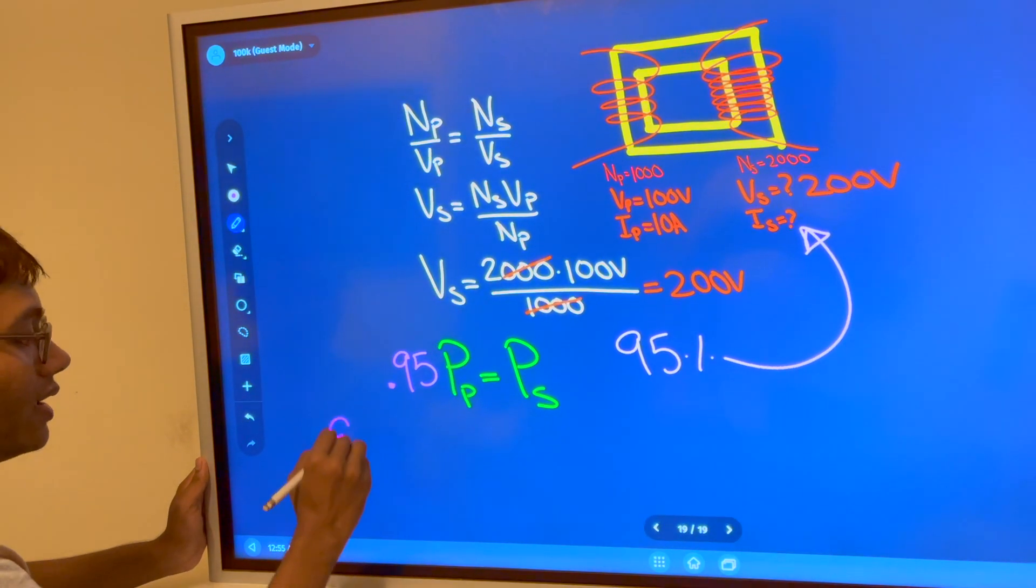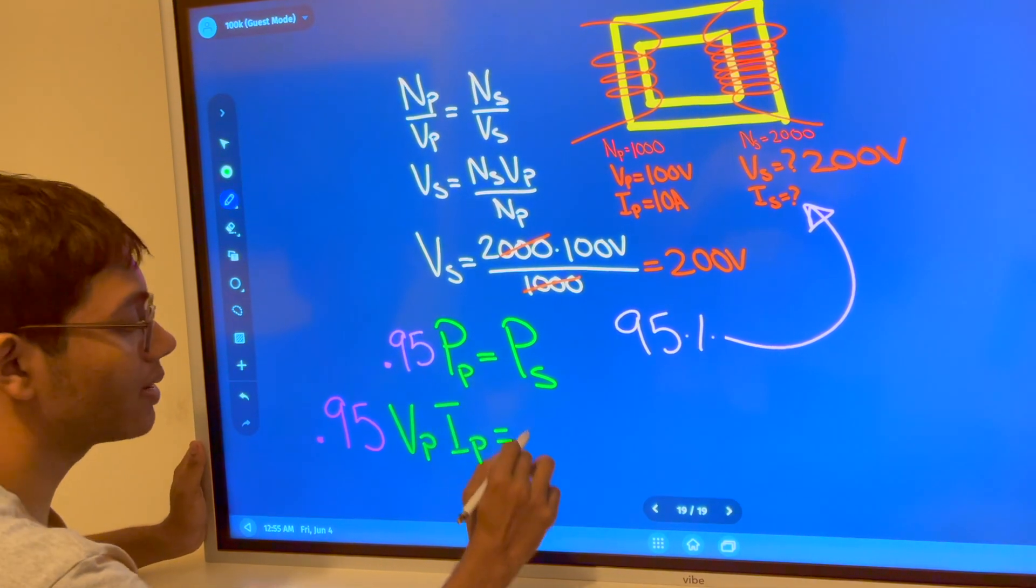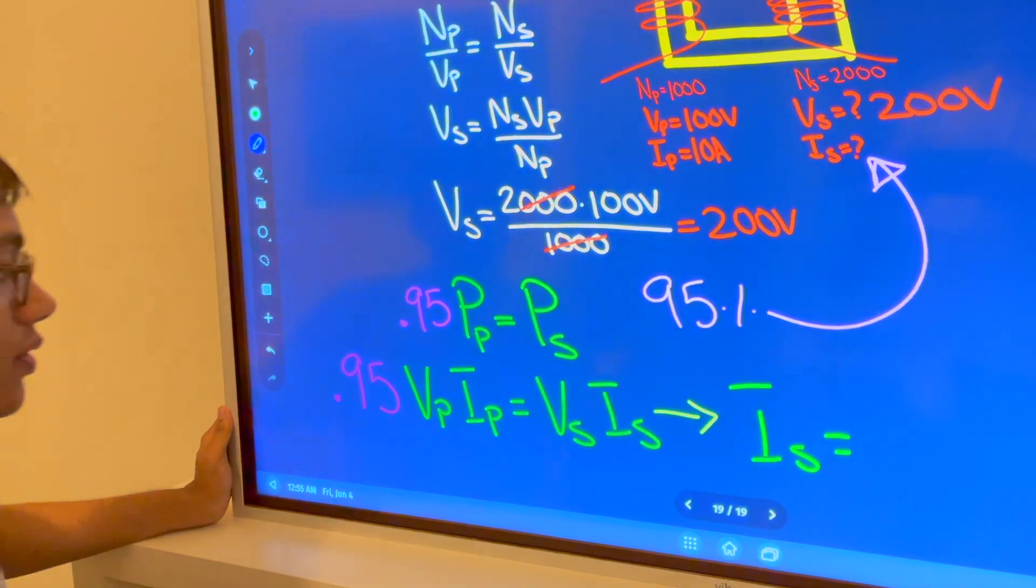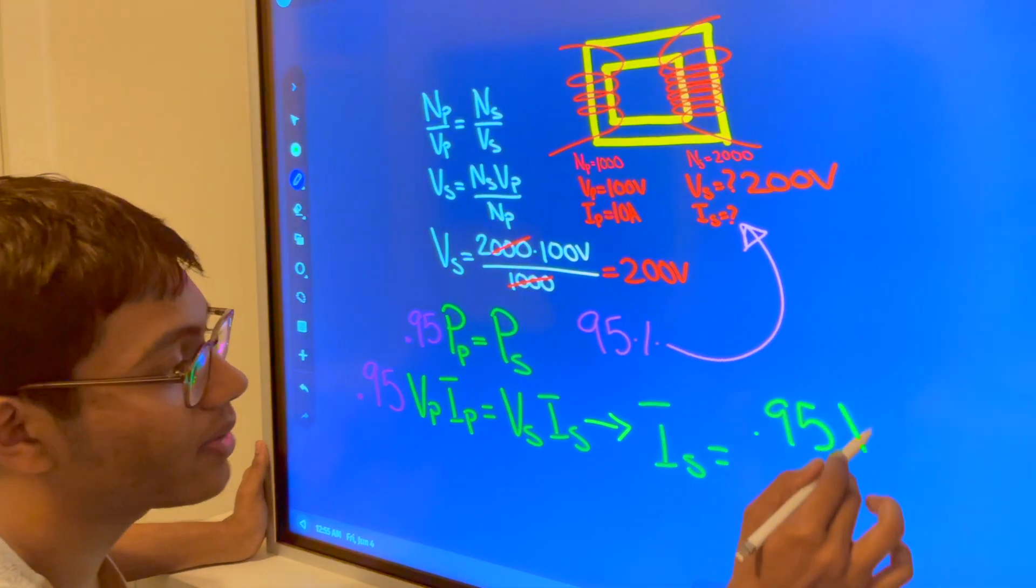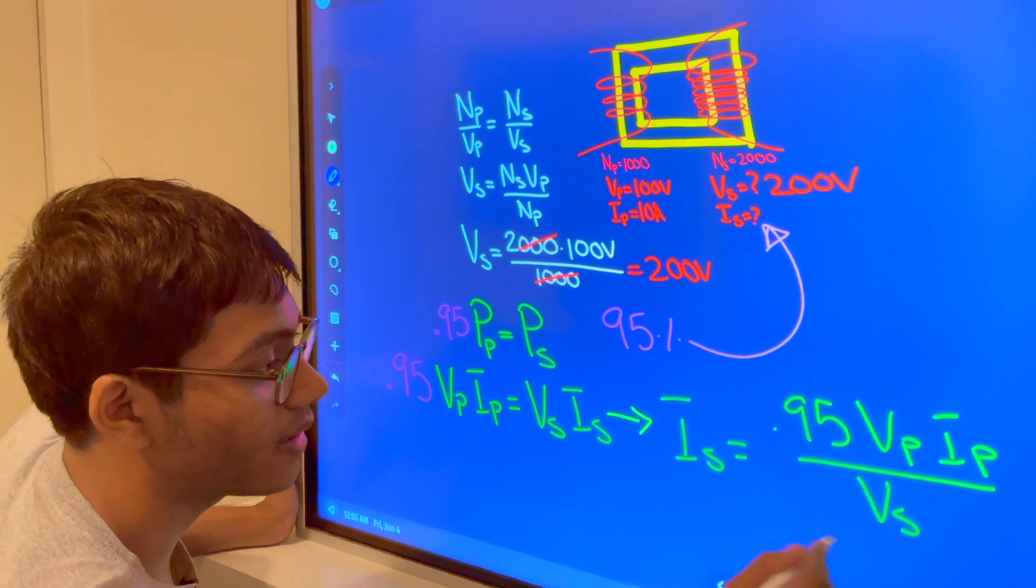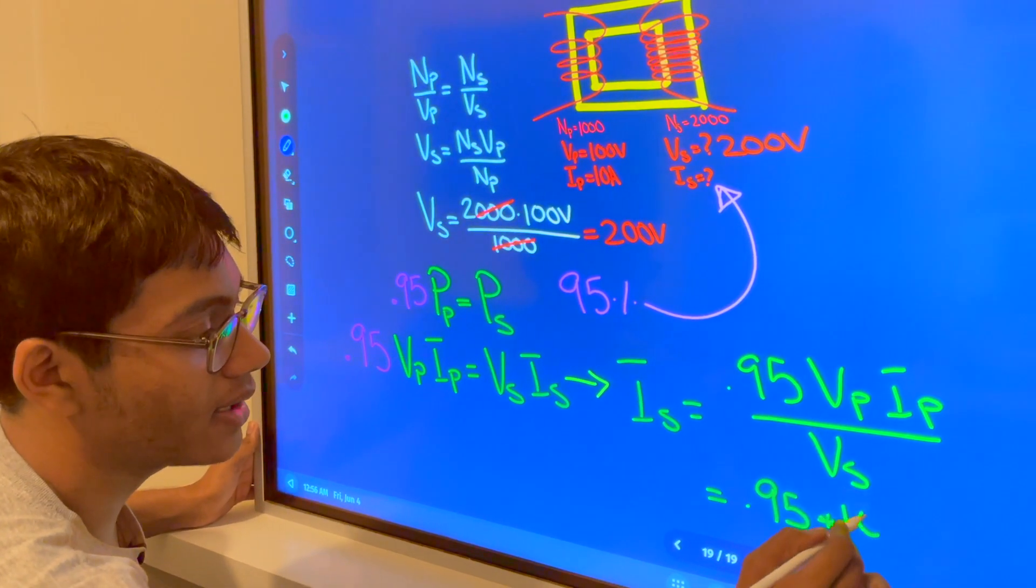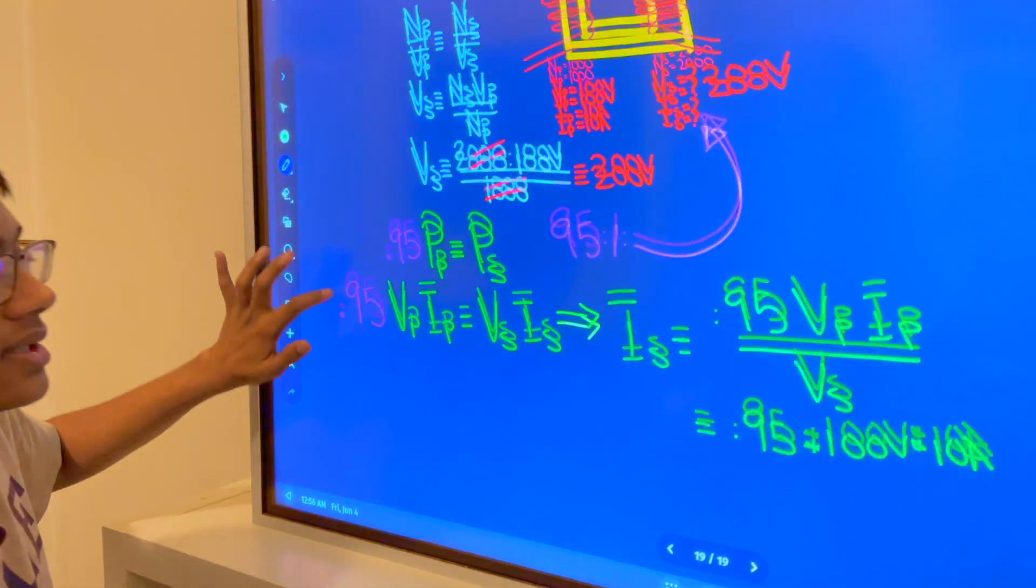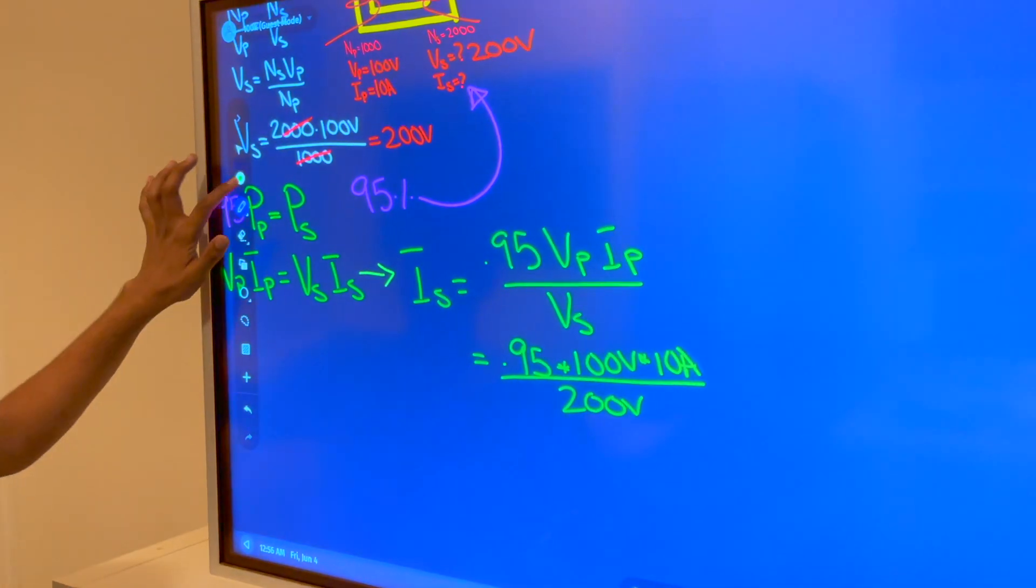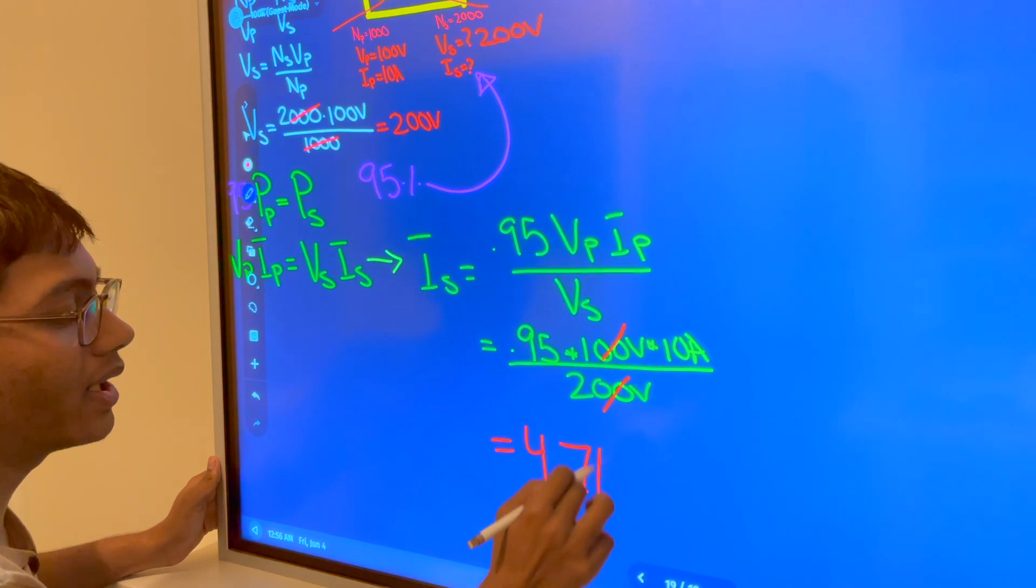What's the primary power? Power is voltage times current. So the primary voltage times the primary current equals the secondary voltage times the secondary current. If I plug in everything: Is = 0.95 × Vp × Ip / Vs. The primary voltage is 100 volts, the primary current is 10 amps, and the secondary voltage is 200 volts. If I simplify everything, my final answer is about 4.7 amps.